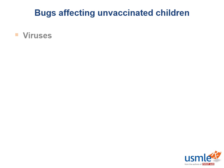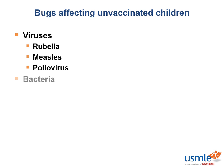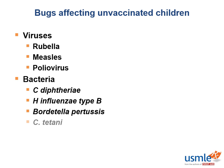The main pathogens protected by vaccines — and therefore potentially affecting unvaccinated children — are rubella, measles, and poliovirus, in addition to several bacteria including H. influenzae type B, Clostridium tetani, Bordetella pertussis, and Corynebacterium diphtheriae. So which vaccine protects against rubella?